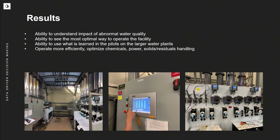What results do we want to see? We want the ability to understand the impact of abnormal water quality — if there's a seasonal event, we want to understand that. A cloud-based system will be able to run those scenarios very quickly. We want to see the most optimal way to operate the facility, then learn from the pilots and apply that to the larger water plants. The whole idea is to produce safe drinking water but operate it more efficiently — optimizing chemicals, power, and salts and residual handling.